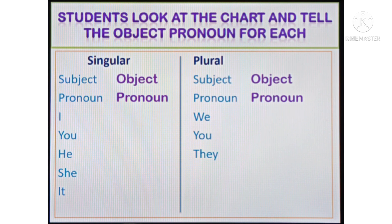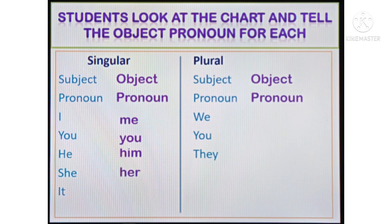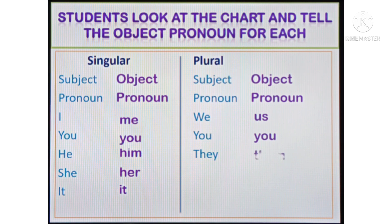Let's review all pronouns. Singular subject pronouns: I, you, he, she, it. Plural subject pronouns: we, you, they. Singular object pronouns: me, you, him, her, it. Plural object pronouns: us, you, them.